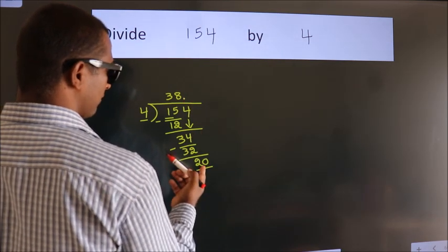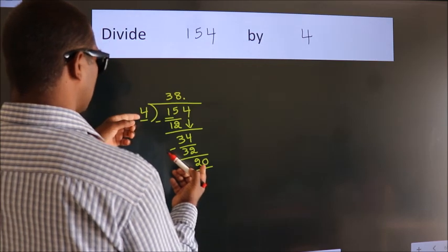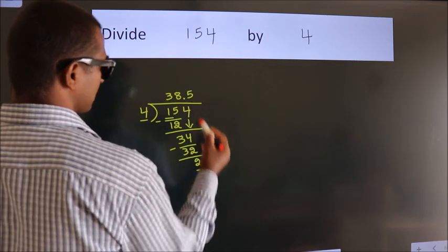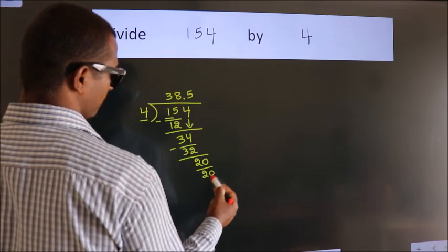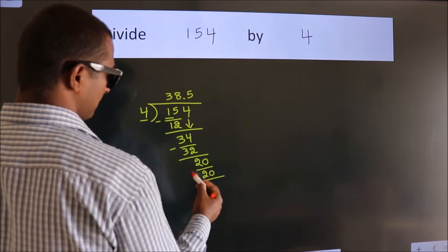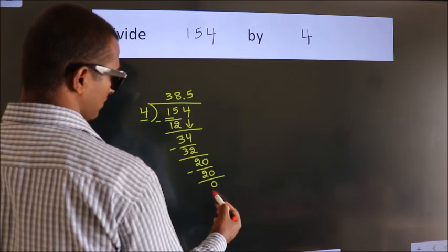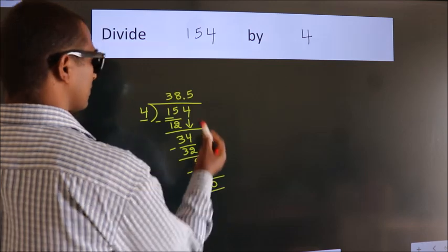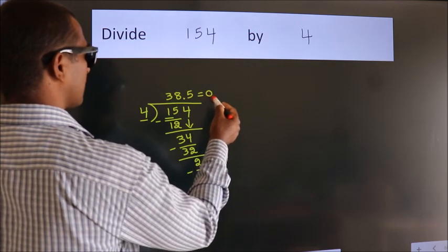When do we get 20 in the 4 table? 4 fives is 20. Now we subtract and get 0. We got remainder 0, so this is our quotient.